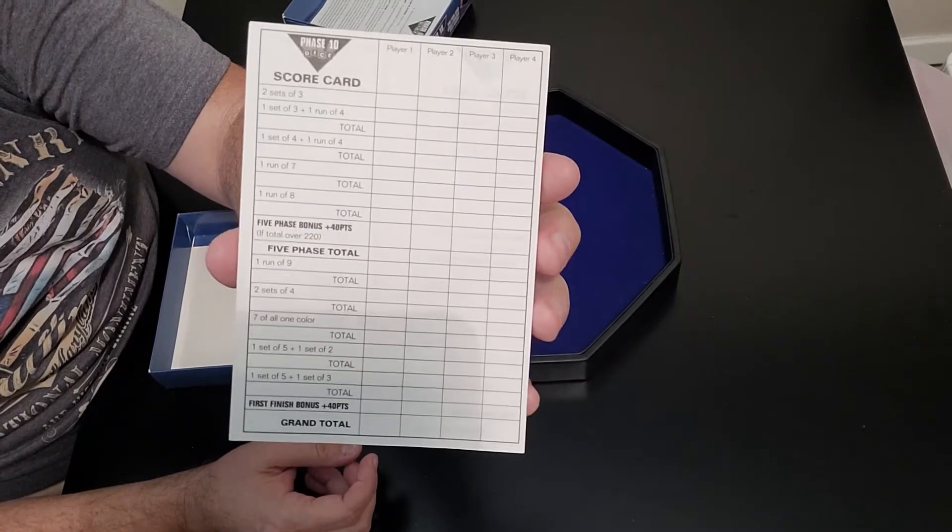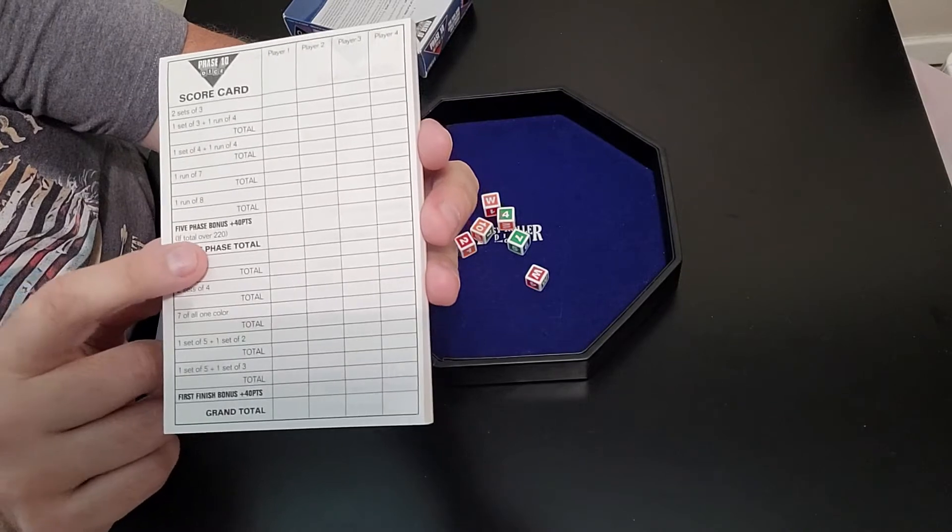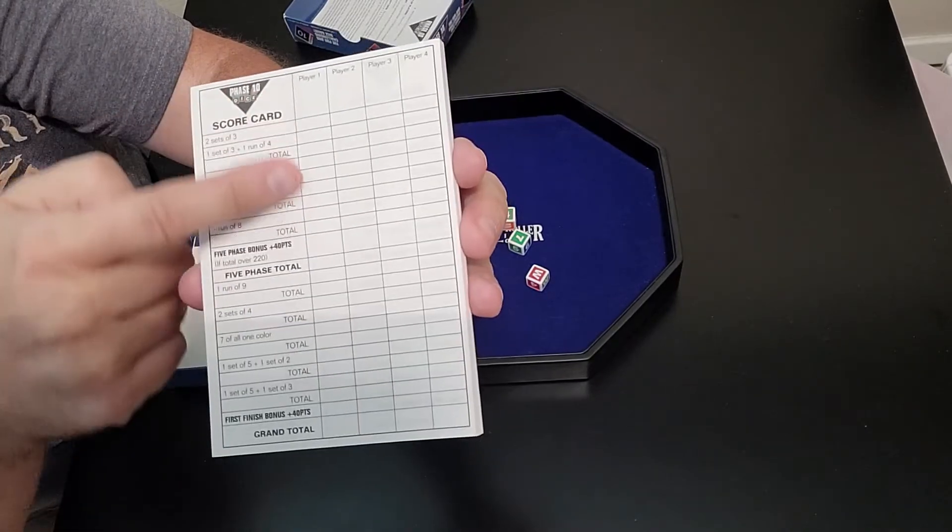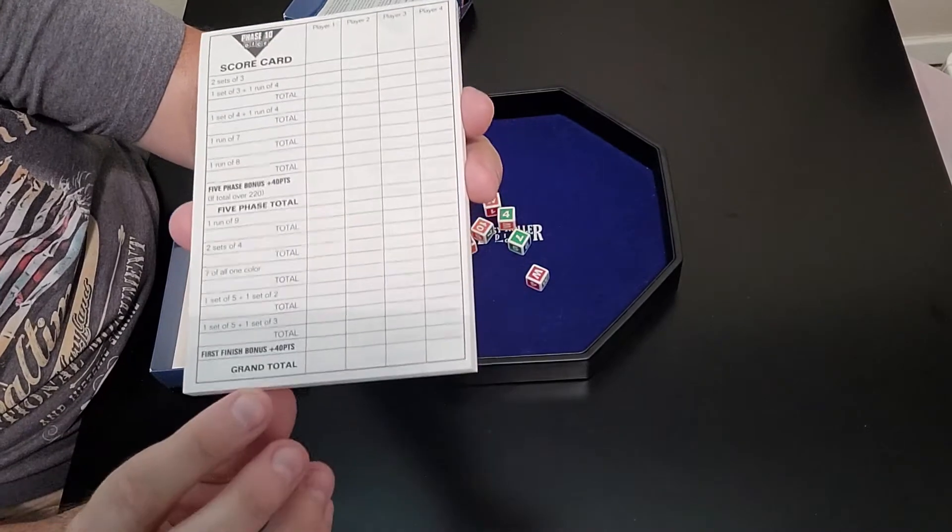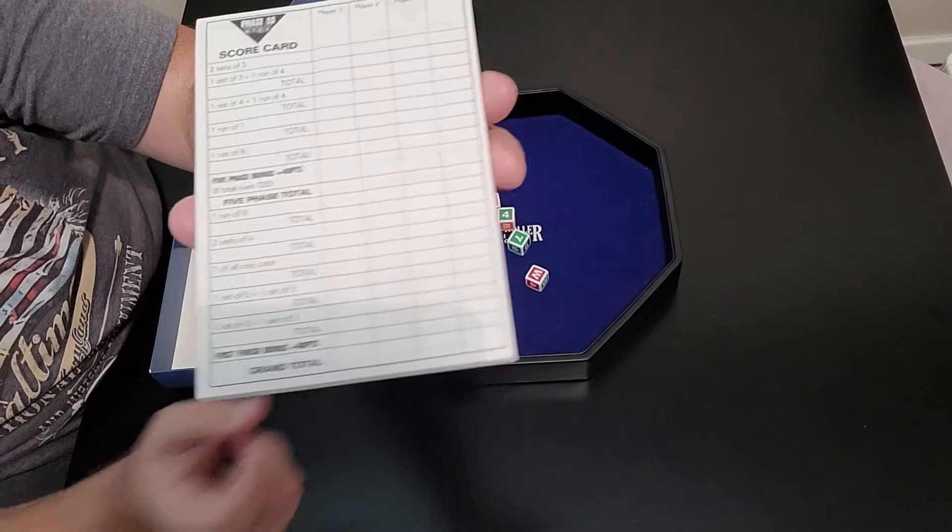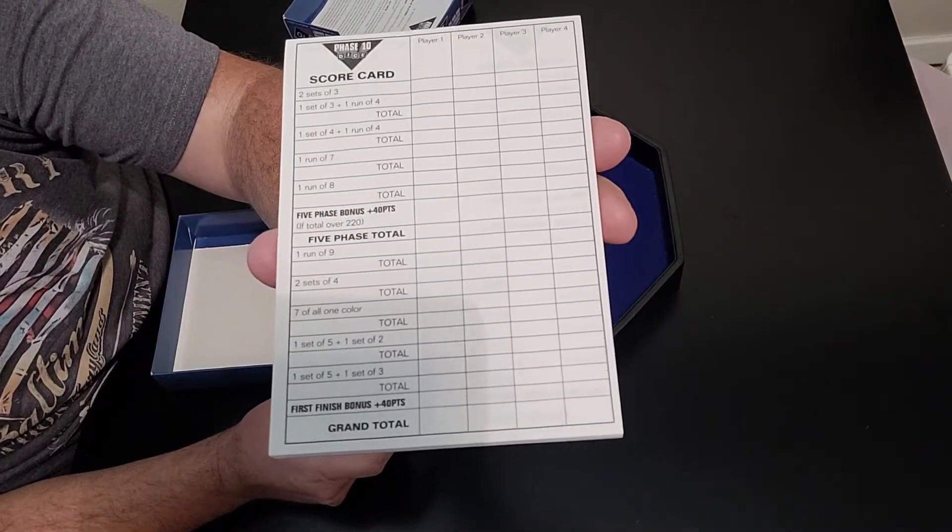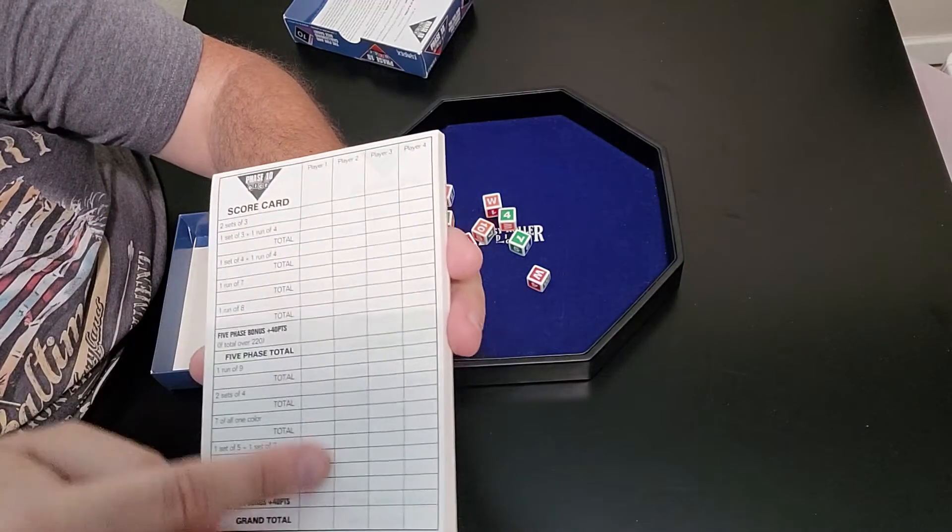Now, you can see, as I said in the intro, you have the 10 phases here. After the first 5, if you score over 220 points after the first 5, you get a bonus 40 points. And also, if you're the first to finish all of your phases, then you also get a 40-point bonus. Let me go ahead and show you how this works. So you can see there's 4 players that you can fit on each pad.